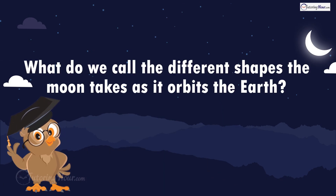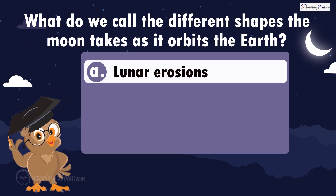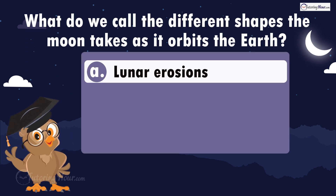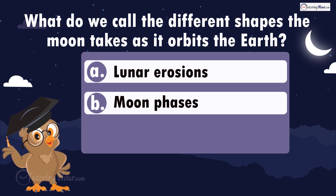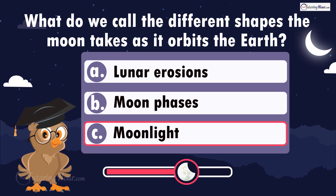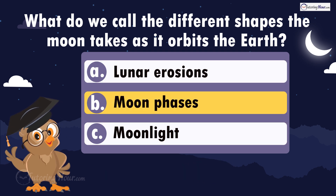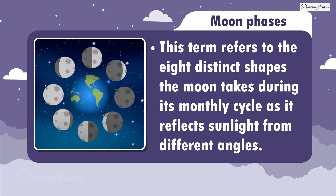What do we call the different shapes the moon takes as it orbits the Earth? Is it A, lunar erosions; B, moon phases; or C, moonlight? The correct answer is moon phases. This term refers to the eight distinct shapes the moon takes during its monthly cycle as it reflects sunlight from different angles.